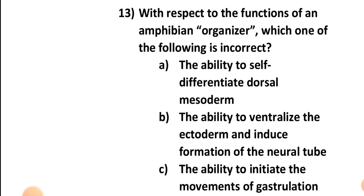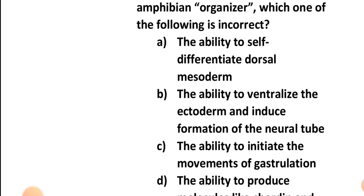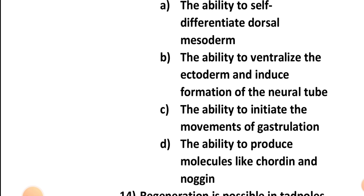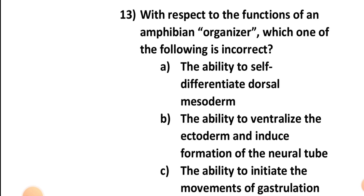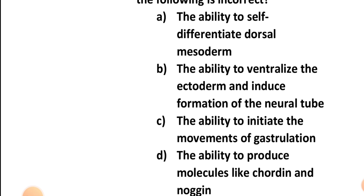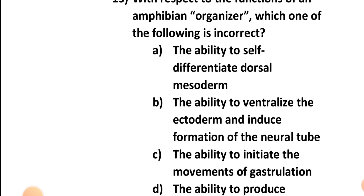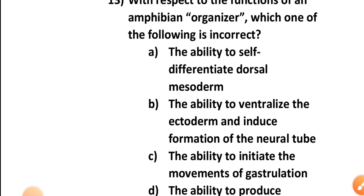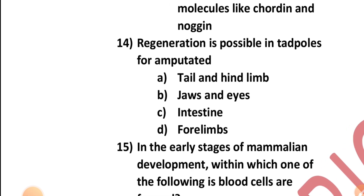Question number thirteen: With respect to the functions of an amphibian organizer, which one of the following is incorrect — the ability to self-differentiate dorsal mesoderm, the ability to ventralize the ectoderm and induce neural tube formation, the ability to initiate gastrulation movements, or the ability to produce molecules like chordin and noggin? The ability to self-differentiate dorsal mesoderm is correct, initiating gastrulation is correct, and producing chordin and noggin is correct. The incorrect option is B — the ability to ventralize the ectoderm and induce formation of the neural tube.